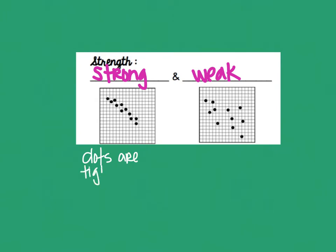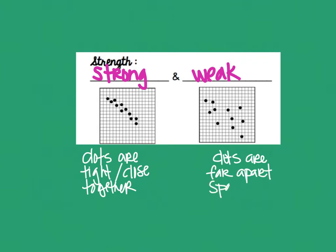I'm going to say the dots are tight or they are close together. And then when you look at the weak graph, the dots on this side, they are far apart, or they have space in between. There's not a very strong magnetizing force among all the dots pulling them close together.